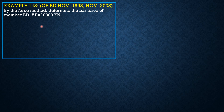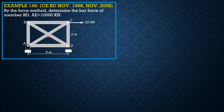AE is 10,000 kN. So this is member BD. The first step is to remove BD and apply force P, which is invented because I'm going to solve this by Castigliano's second theorem so that we can compute the relative displacement between joints B and D.